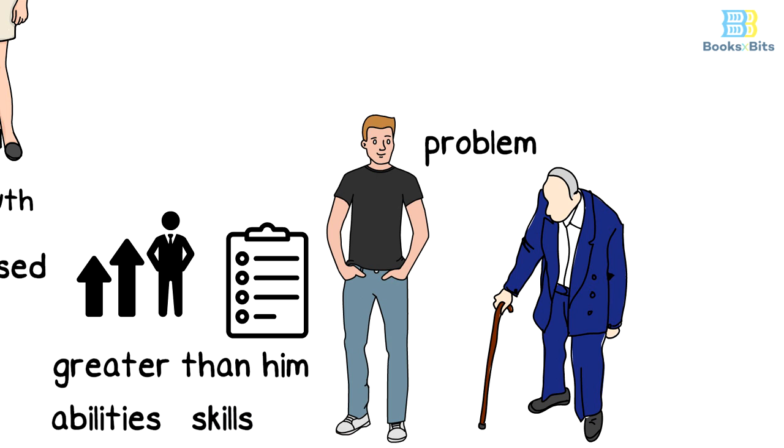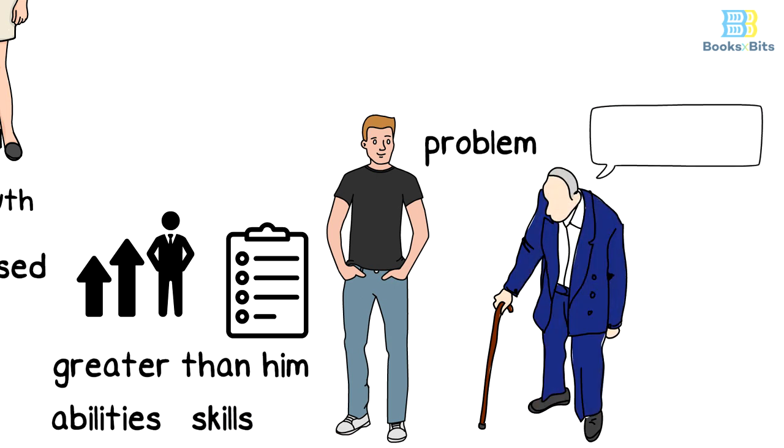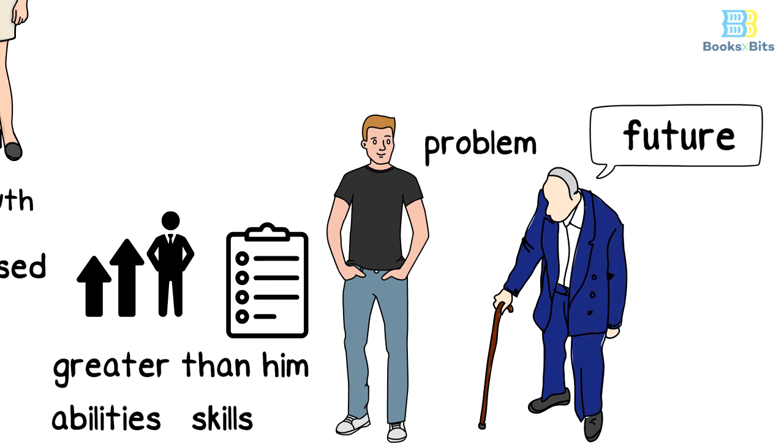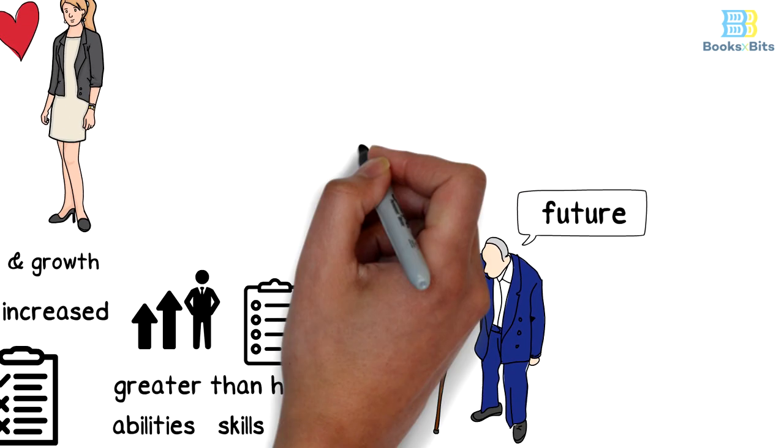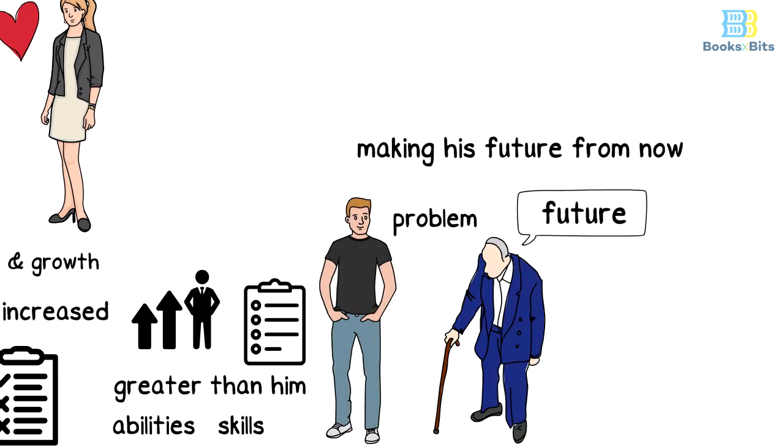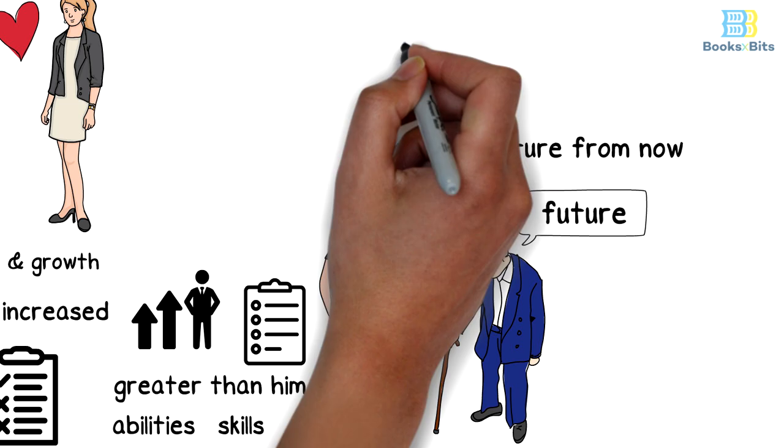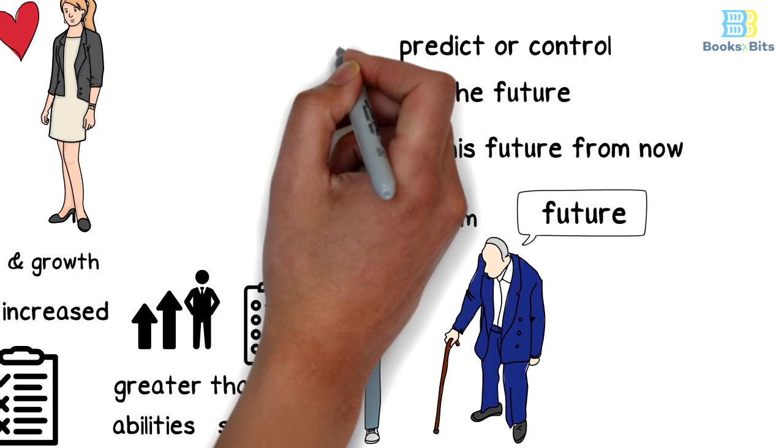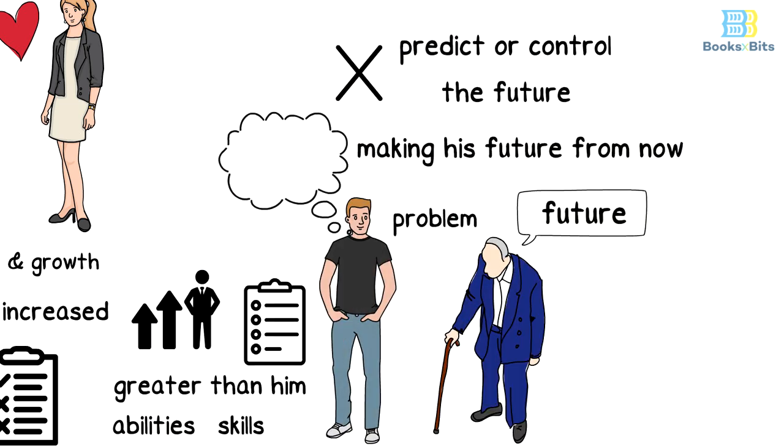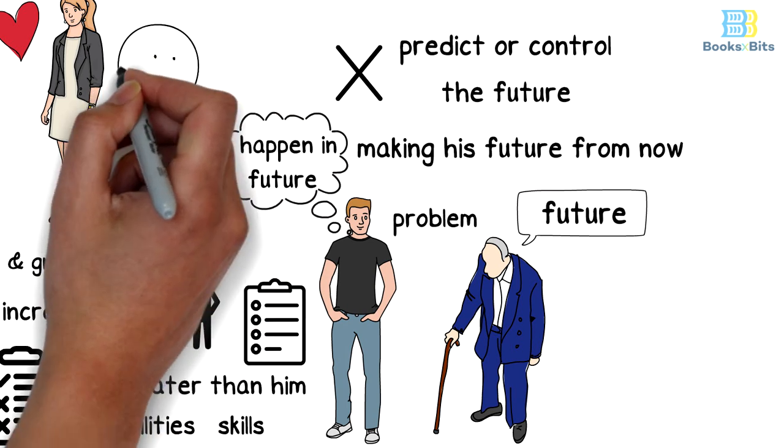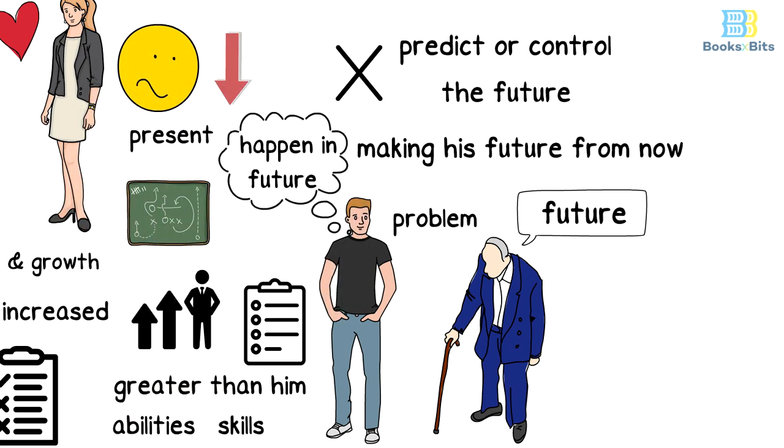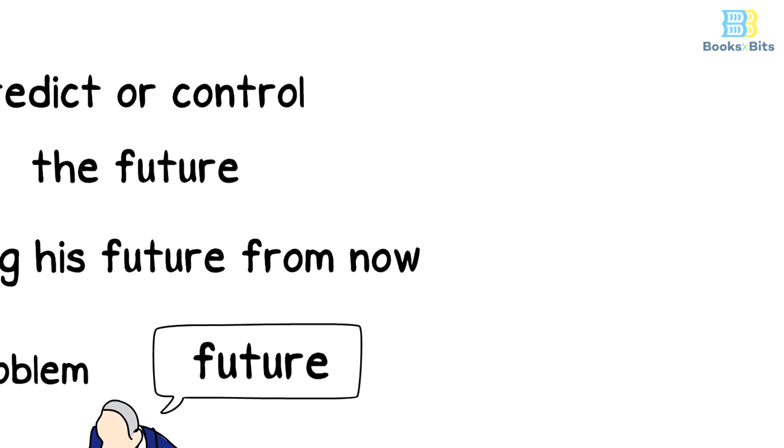The old man told the young man that there's another important element that he didn't pay attention to, which is the future. It was wise to start making his future from now. He told him that no one can protect or control the future but still, if you imagined what you want to happen in the future with greater clarity and planned for it and you did something to achieve it, your concern for it in the present will decrease and the future will become clearer to you.